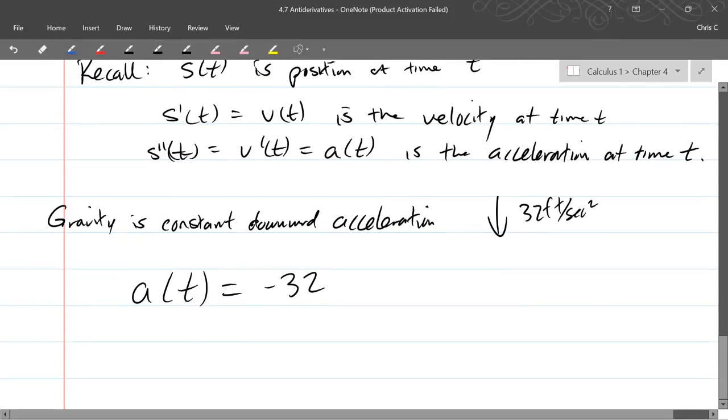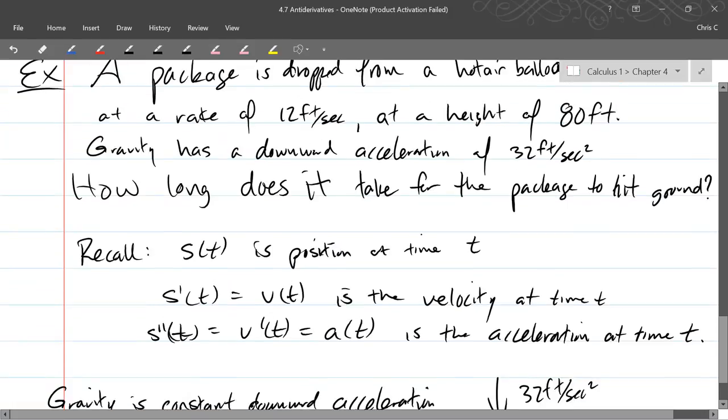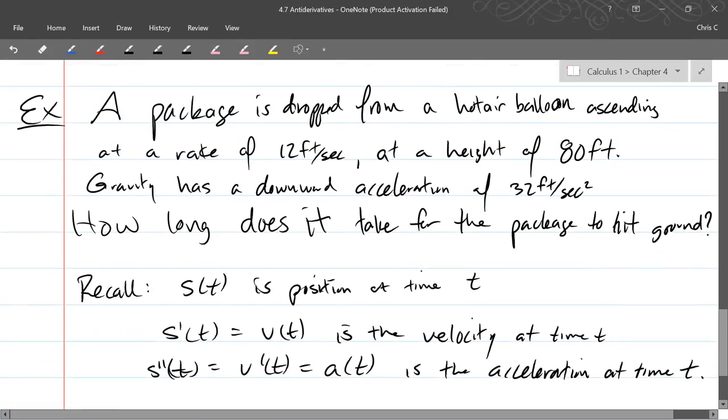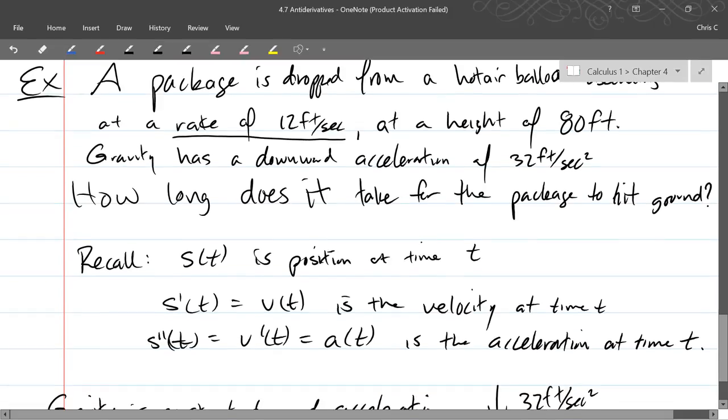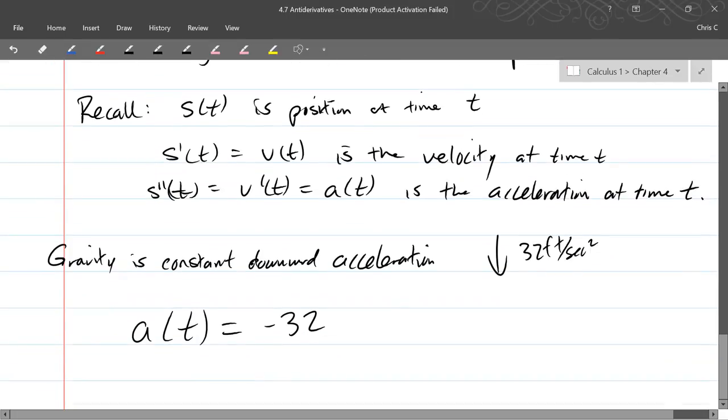So that means my a of t function is very easy to write. So it's a constant function. I can either go with 32 or negative 32. So let's do negative 32. So up will be positive, down will be negative. So the acceleration function is relatively easy because all we have is gravity accelerating down. Now obviously when we drop the package, the velocity is going to change the longer it's been falling for. So we have to be way more careful about the velocity. Ascending is what? Up or down? Up. But remember ascending refers to the initial rate or the initial velocity. Alright, so any questions on this constant acceleration function?